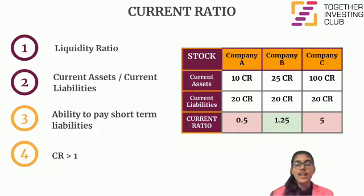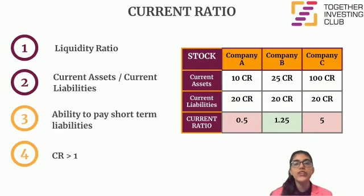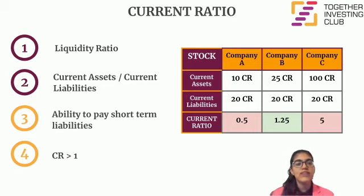Hi everyone, this is Aditi Goswami from Together Investing Club. Current ratio is a liquidity ratio that helps us to measure a company's ability to pay short-term debts, or those which are due within a year. It's calculated by dividing the current assets of a company by their current liabilities.